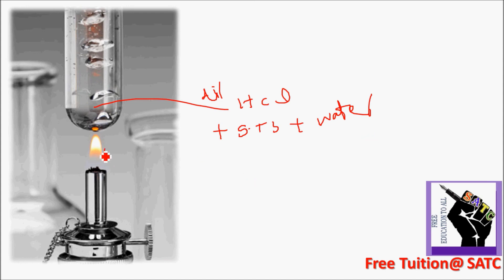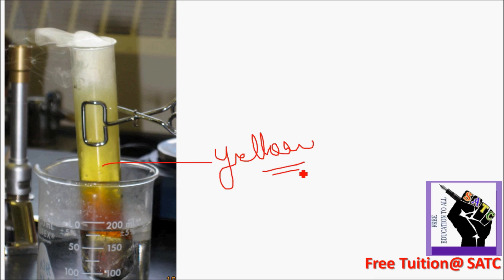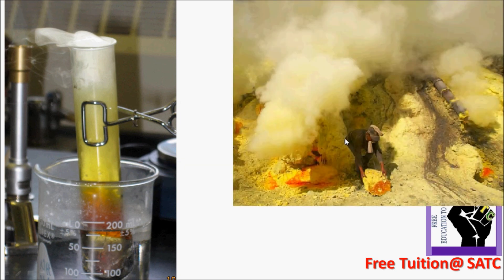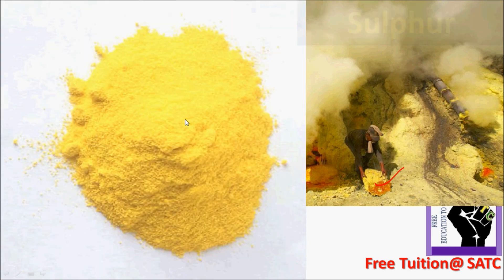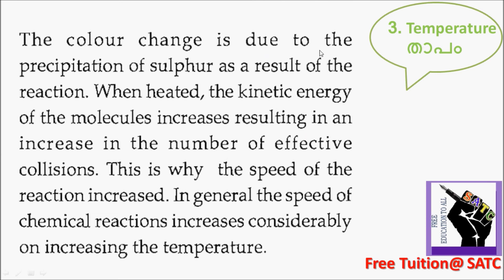What happened? Heat was applied only in one test tube. A yellow precipitate formed. It is known as sulfur — yellow in color. So sulfur is available. The color change is due to the precipitation of sulfur as a result of the reaction. When heated, the kinetic energy of the molecules increases, resulting in an increase in the number of effective collisions. This is why the speed of the reaction increases. In general, the speed of a chemical reaction increases considerably on increasing the temperature.